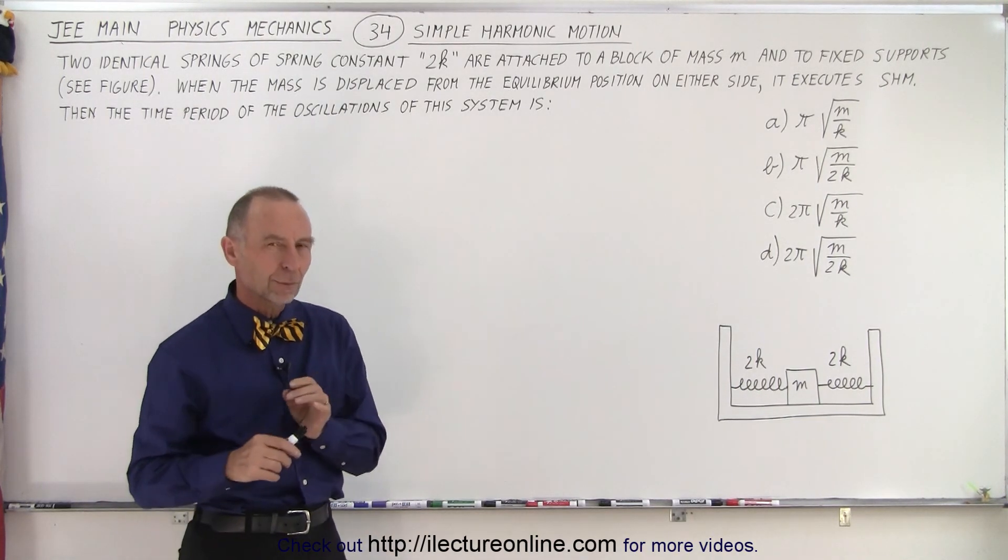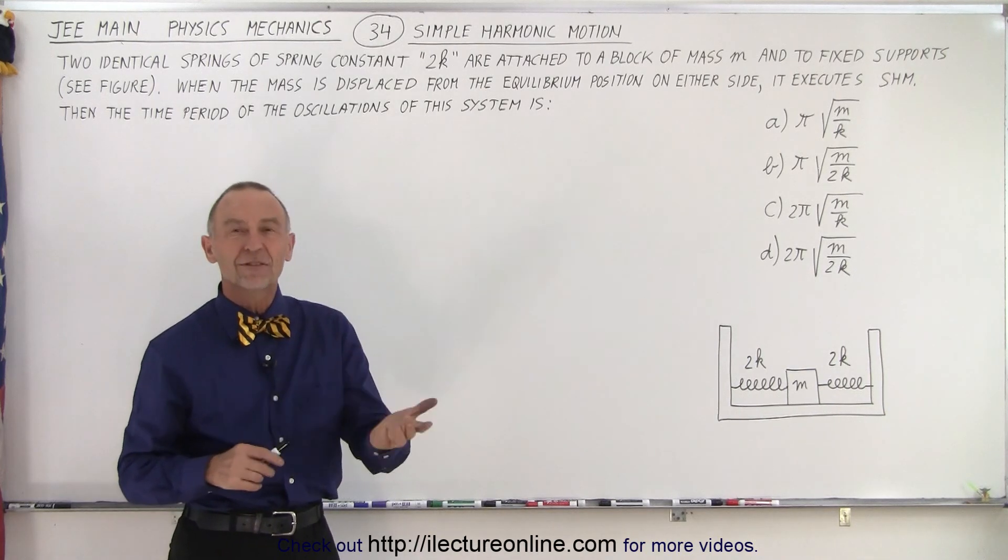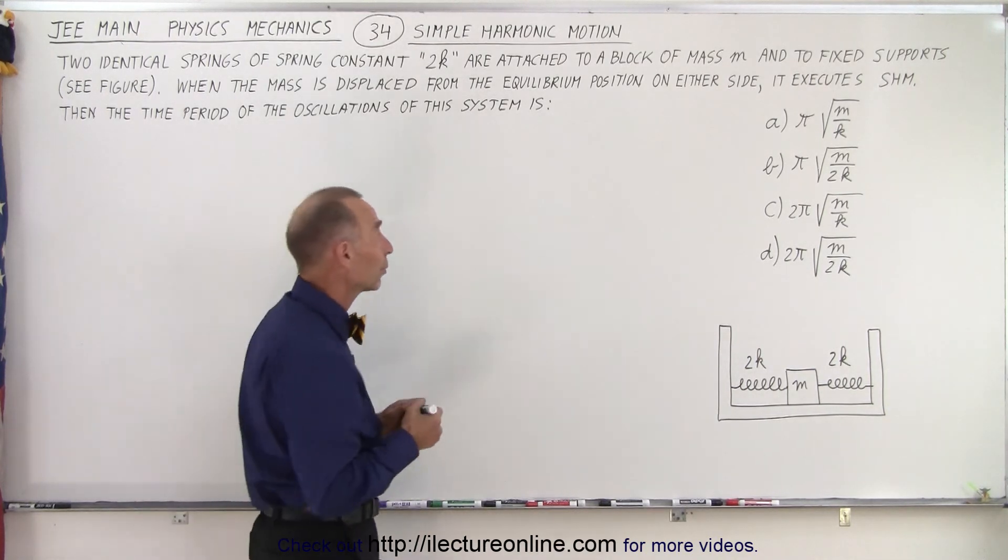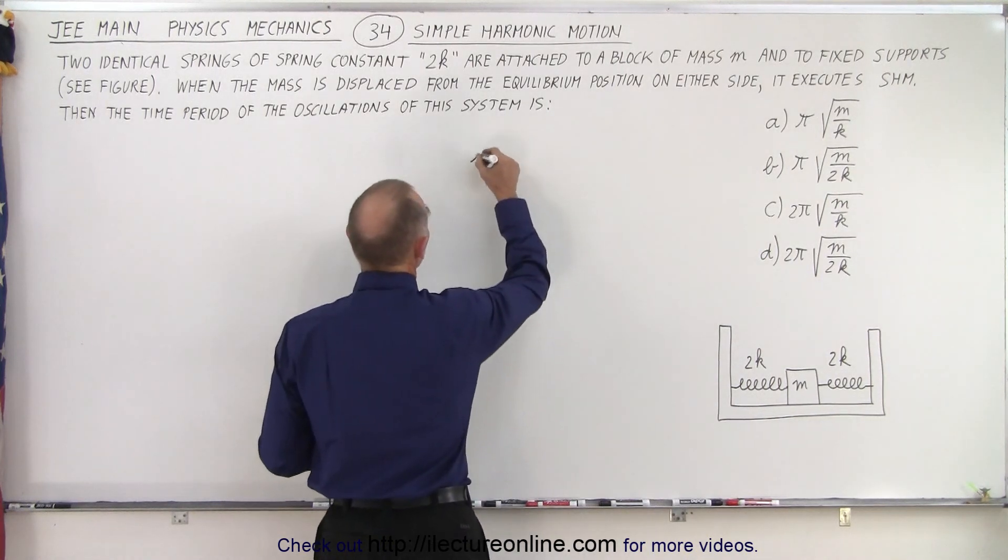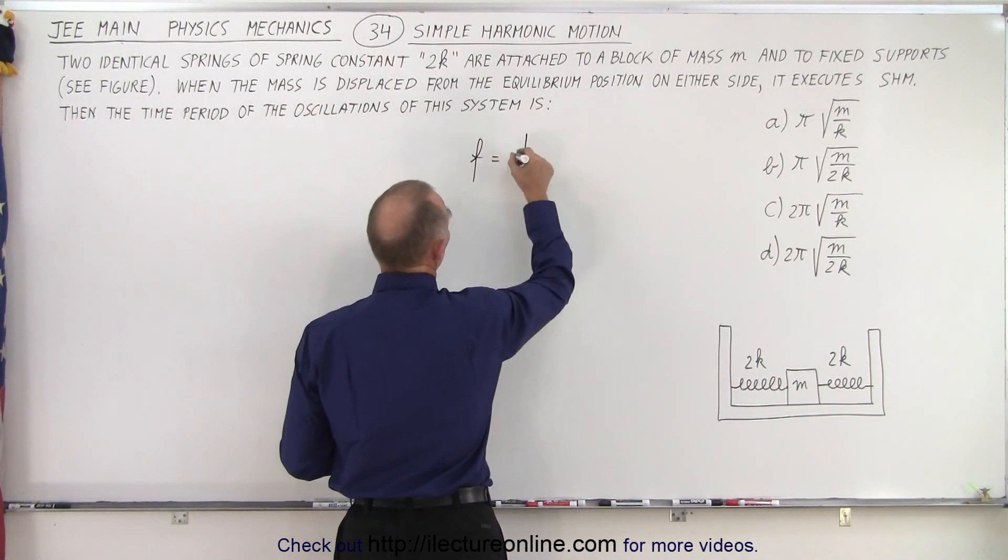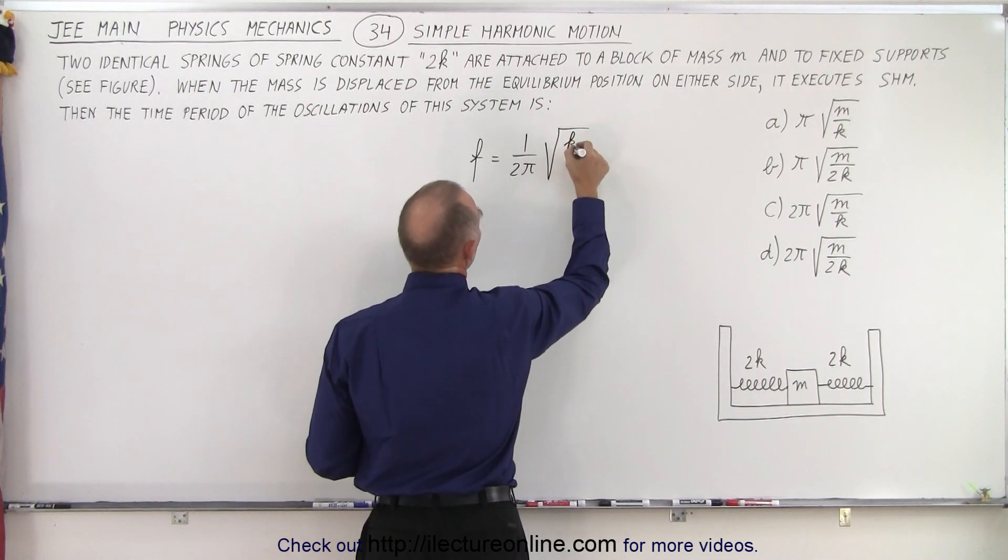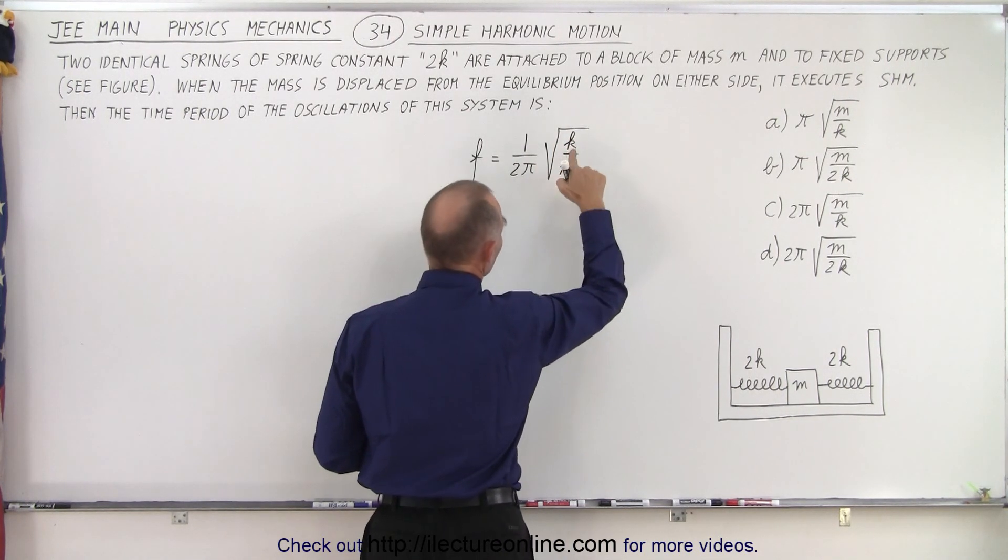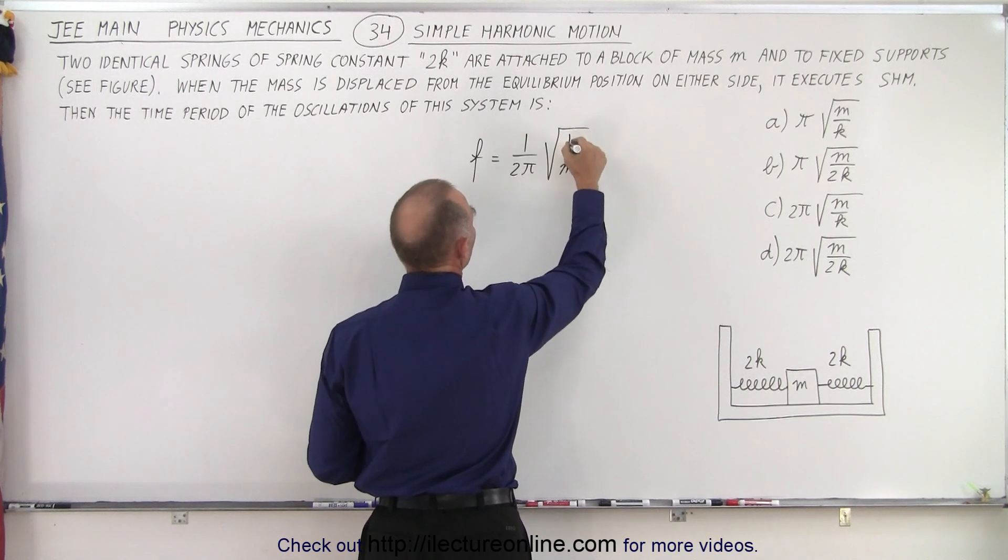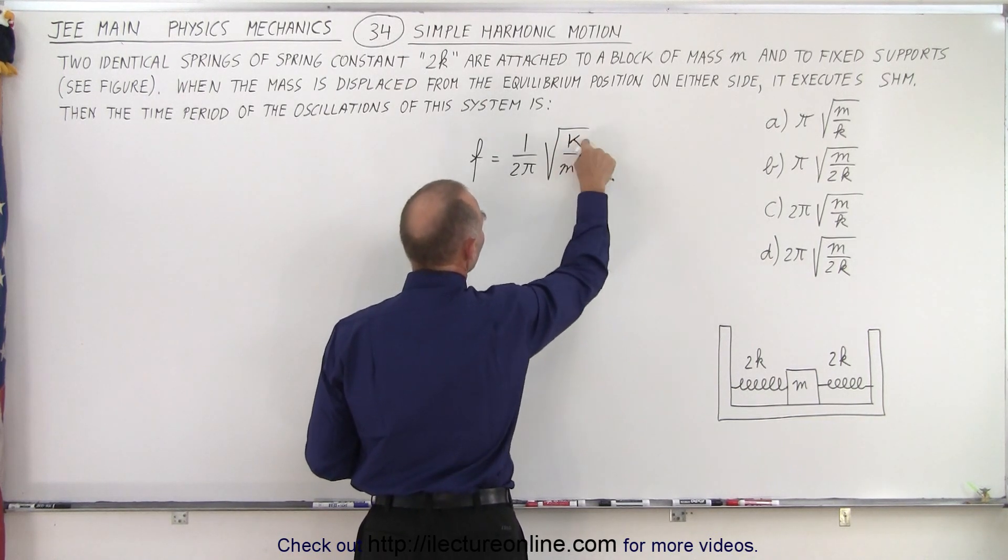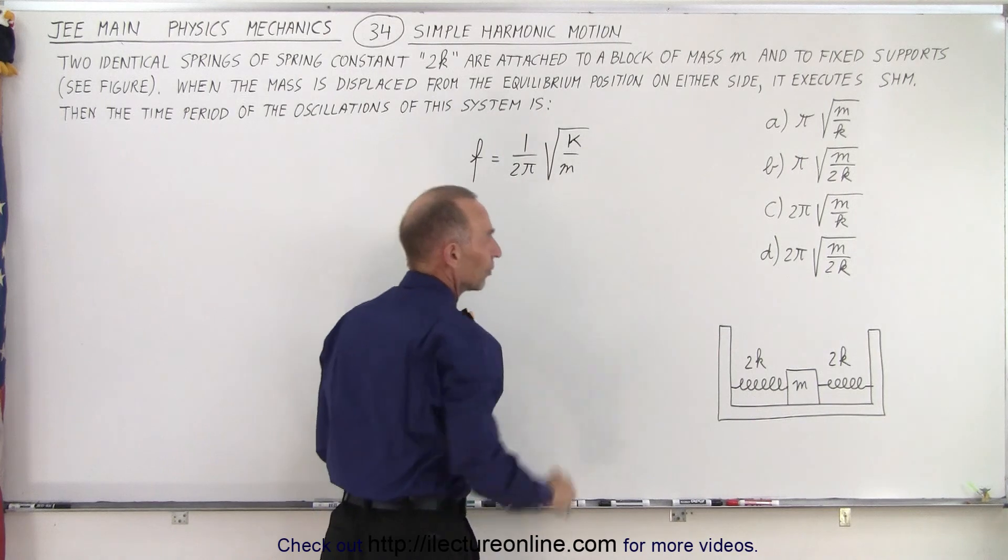Now I don't like to remember or memorize the equation of the period; I always like to memorize the equation of the frequency. The frequency of oscillation is always equal to 1 over 2π times the square root of k over m. Now what I'm going to do, instead of using this kind of k, I'll use a general k like this so that you can see that this k is not the same as the k's over there.